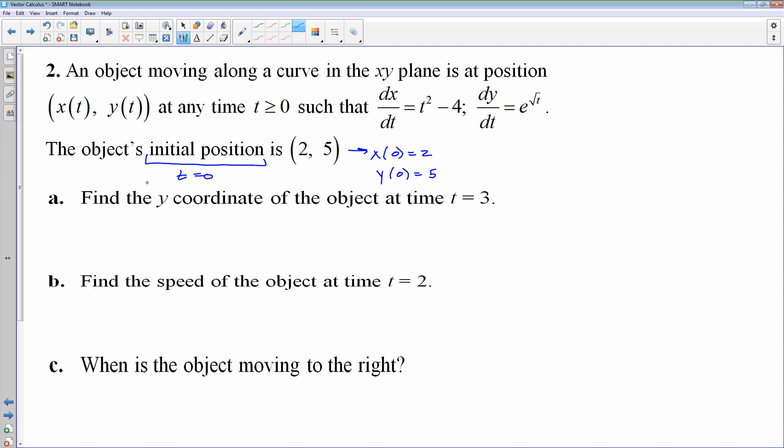Part A, a different type of question that, again, was not in those notes, find the y coordinate at time t is equal to 3. Well, I know how y changes. dy/dt tells me how y changes, but I don't have the actual function for y. Now, one thing you could try to do would be to find the antiderivative, but I intentionally chose one where the antiderivative is not easy, or it may not even be possible.